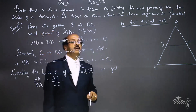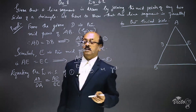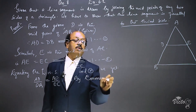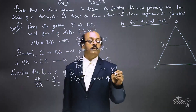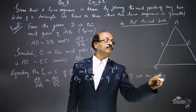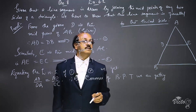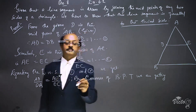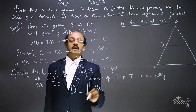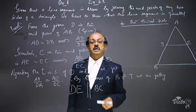Here we apply the Converse of the Basic Proportionality Theorem (Converse of BPT), also known as the Converse of Thales' Theorem. Since AD/DB = AE/EC, by the Converse of BPT we get DE parallel to BC.